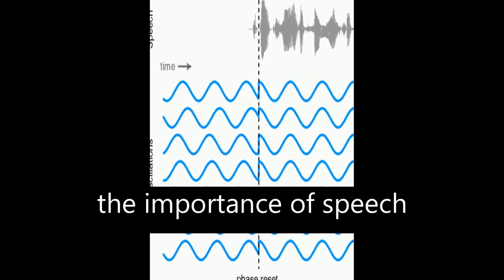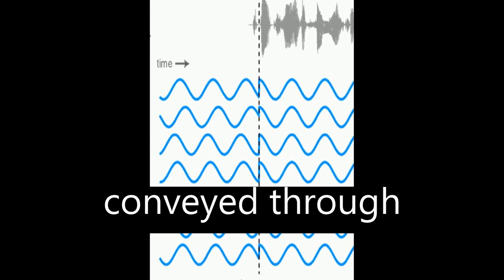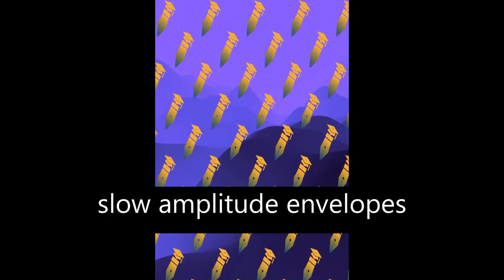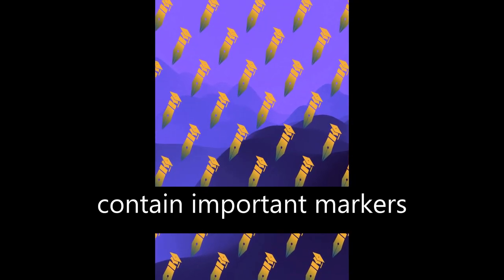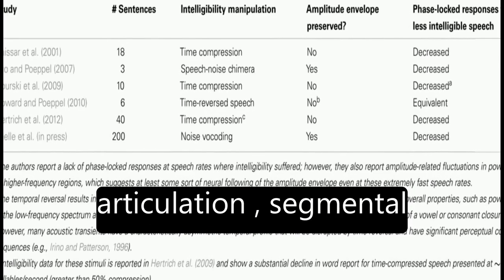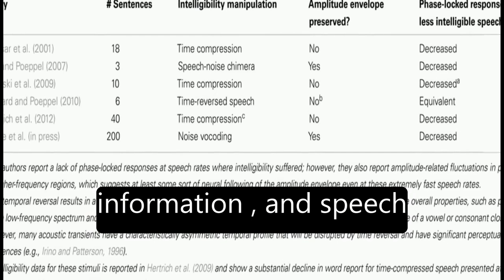The article discusses the importance of speech rhythm and how it is conveyed through amplitude modulations in slow amplitude envelopes. These modulations contain important markers for place and manner of articulation, segmental information, and speech rate.